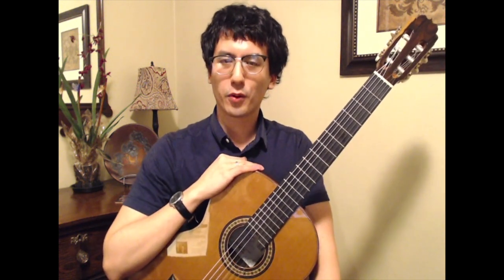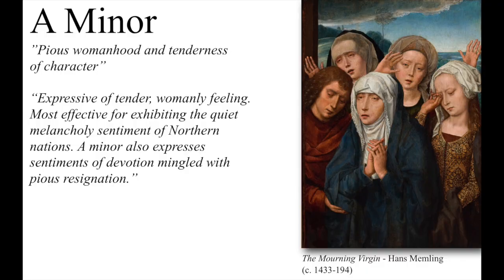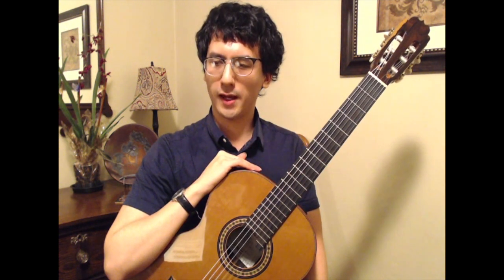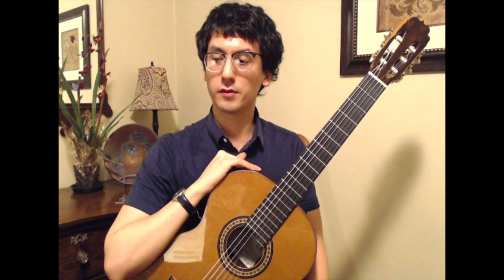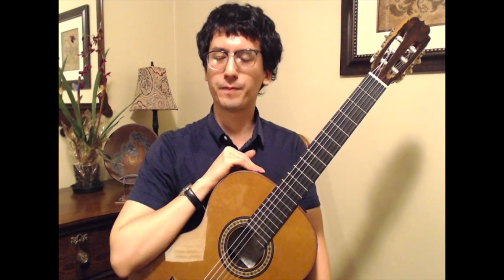So let's begin by exploring what A minor can evoke. In my book, Fundamental Harmony, I have some quotes for each key. For the key of A minor: 'pious womanhood and tenderness of character.' A second quote says 'expressive of tender womanly feeling, most effective for exhibiting the quiet melancholy sentiment of northern nations.' A minor also expresses 'sentiments of devotion mingled with pious resignation.' The key takeaway words I picked up are: pious resignation, tenderness, and melancholic.